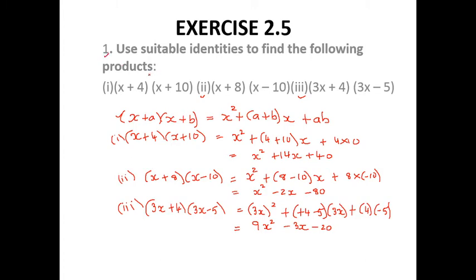In Exercise 2.5 Question 1 there are 5 sums; I have completed 3 sums. The identity we used is: (x + a)(x + b) = x² + (a + b)x + ab.